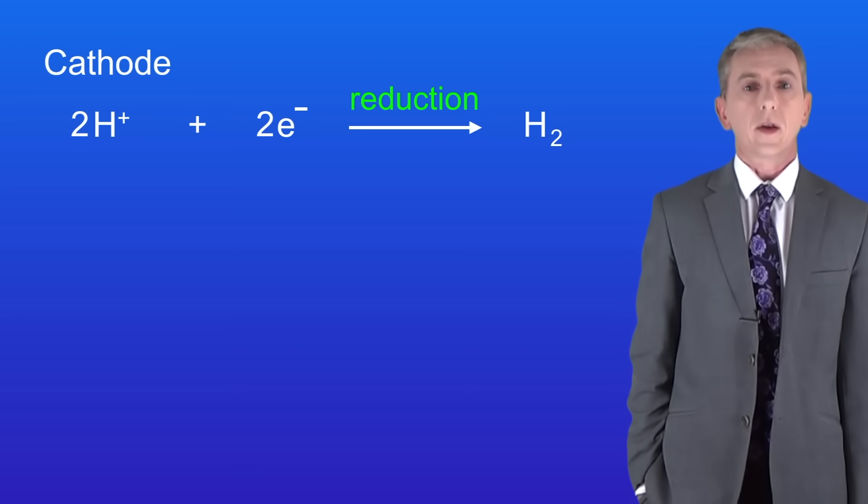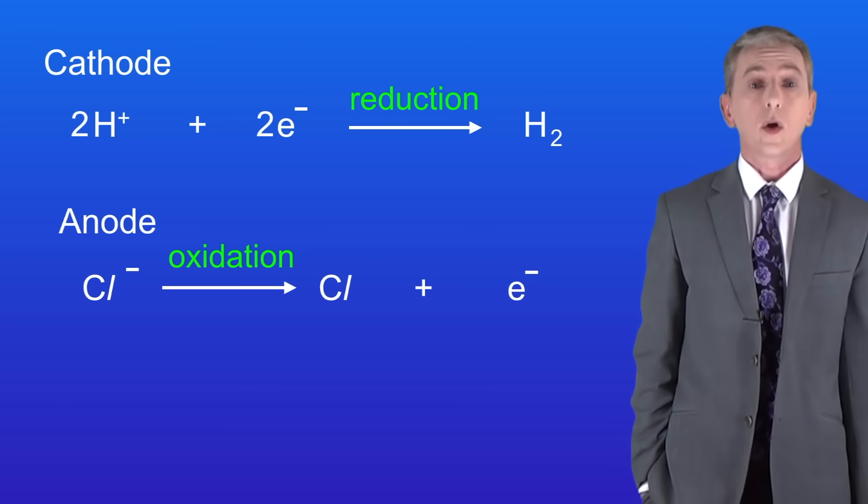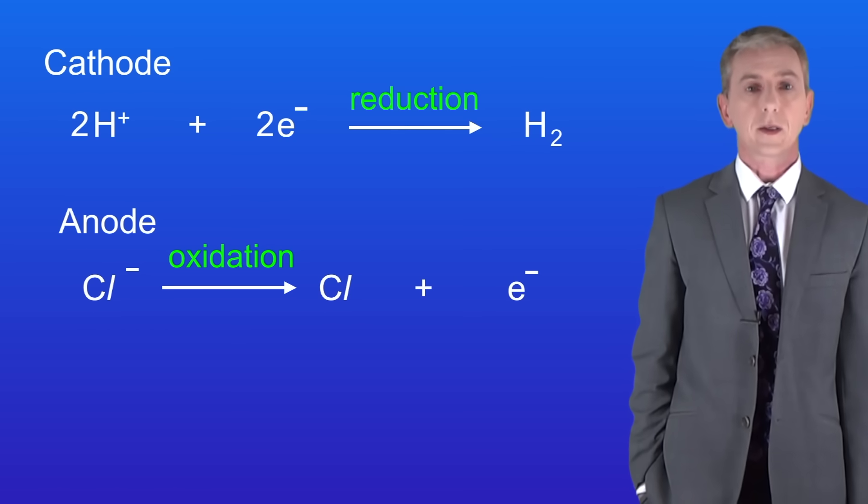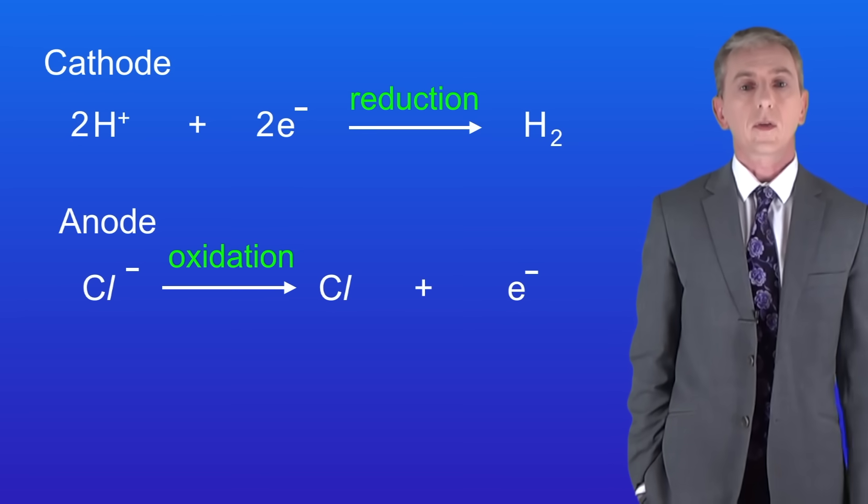Now let's look at the reaction at the anode. Here it is. You can see that the chloride ion is losing one electron to form a chlorine atom. Now chlorine atoms always pair to form a chlorine molecule, so we need to double everything to show this and I'm showing you that here.